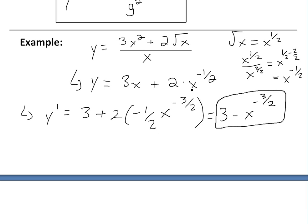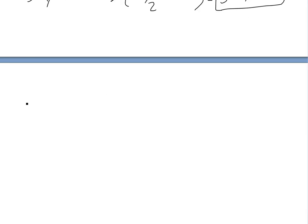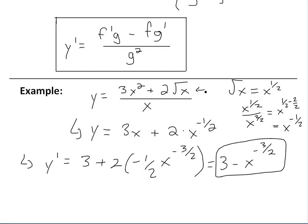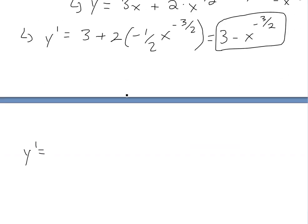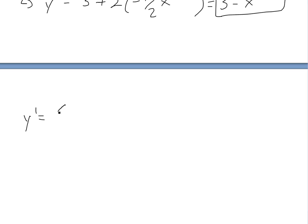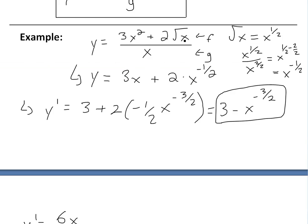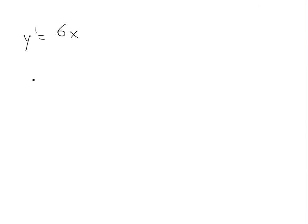That was pretty straightforward — just simplify first and then take the derivative. But if you were to use the quotient rule, I'll do that now just to illustrate how much harder it is. We have y prime equals the derivative of the top times the bottom, minus the top times the derivative of the bottom, all over the bottom squared. The top is 3x squared plus 2 square root of x, so its derivative is 6x for the first term, plus 2 times the derivative of square root of x.